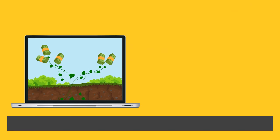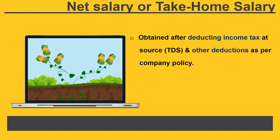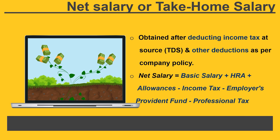Component number three: net salary or take-home salary. This is obtained after deducting income tax at source — that is called TDS — and other deductions as per company policy. Net salary equals basic salary plus HRA plus allowances minus income tax minus employer's provident fund minus professional tax.